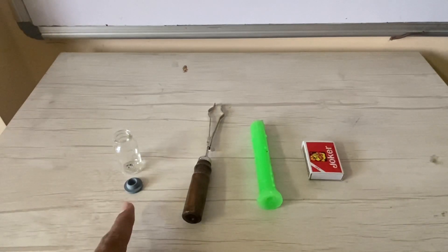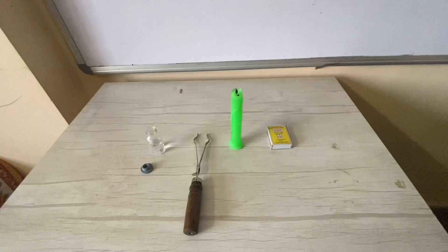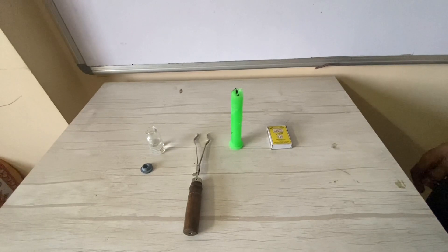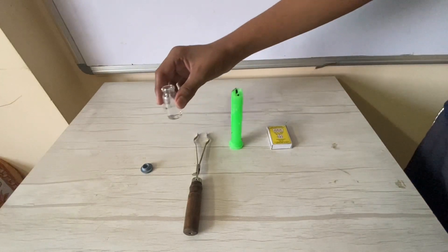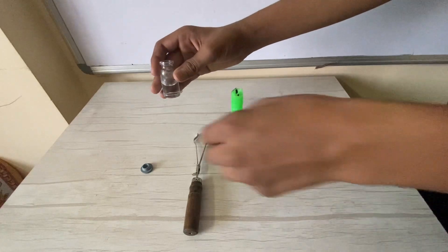bottle, rubber stopper or rubber cap, bottle holder, candle, and a matchstick. Let us begin the activity. Take the bottle - it is already filled with water - and fix the cap to it.